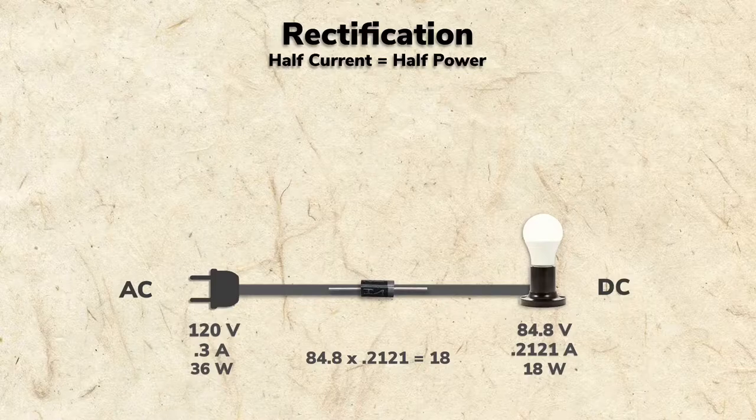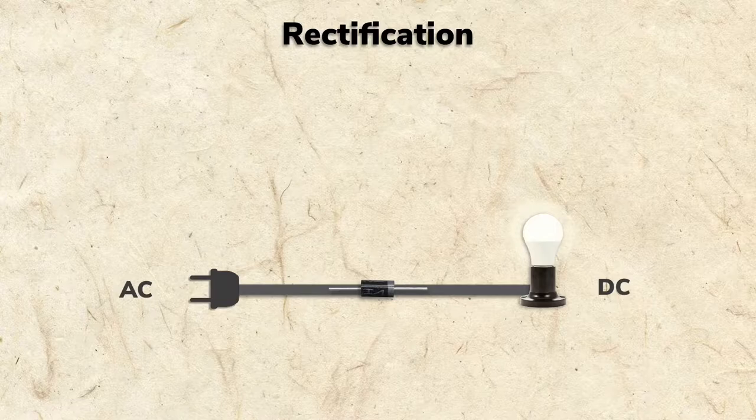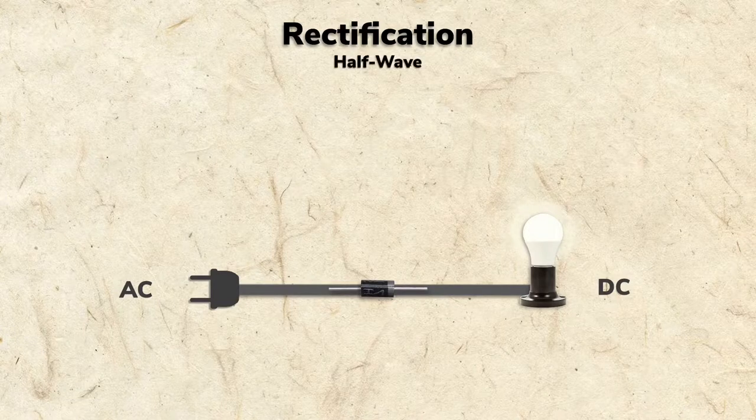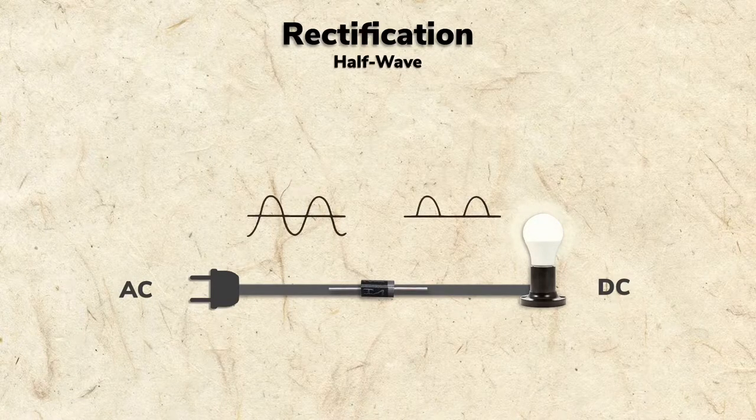Yeah. It adds up. Or should I say multiplies up. Rectification with one diode is called half-wave because it only uses half of the alternating AC wave.